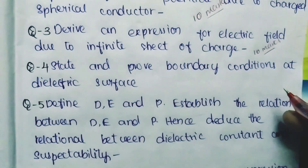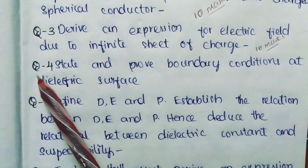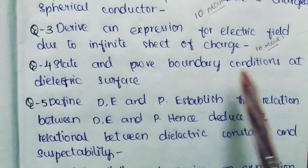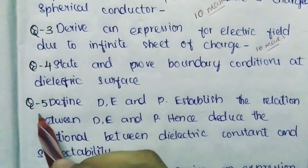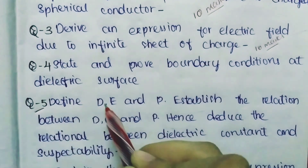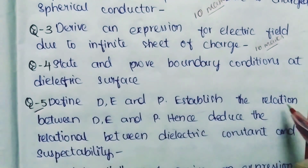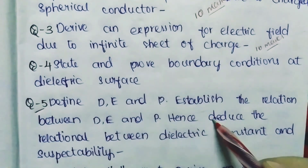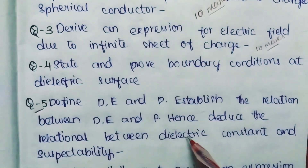Question Number 4: State and prove boundary conditions at a dielectric surface. Question Number 5: Define D, E and P, establish the relation between D, E and P, and hence deduce the relation between dielectric constant and susceptibility.